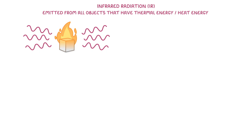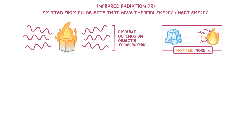Infrared, or IR radiation, is emitted from all objects that have thermal energy, or heat energy, with the amount that gets emitted depending on the object's temperature. So the hotter the object, the more infrared radiation it will emit.